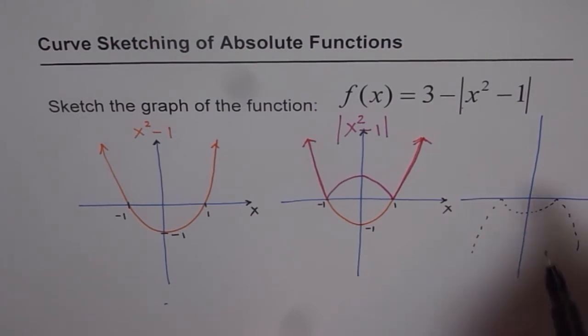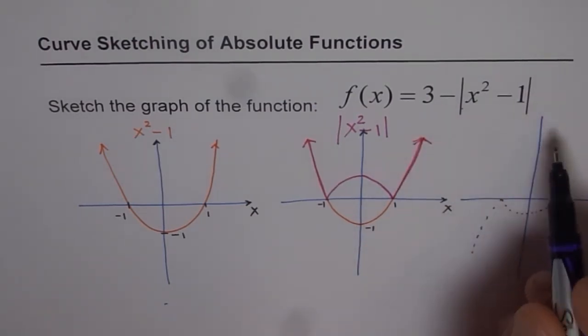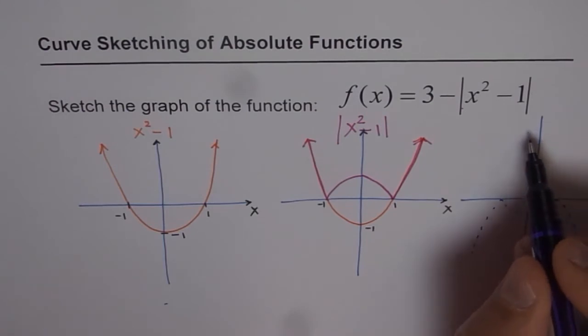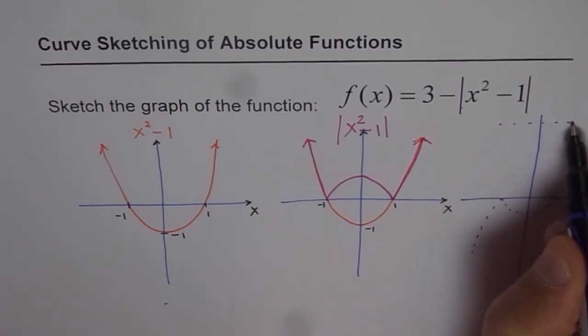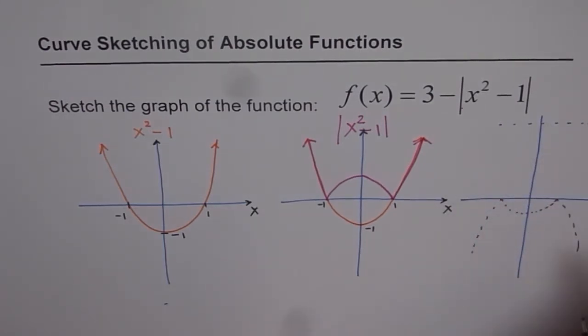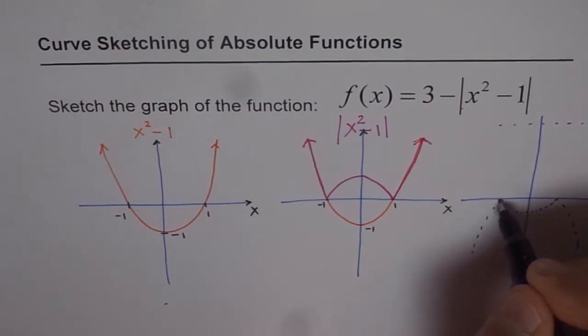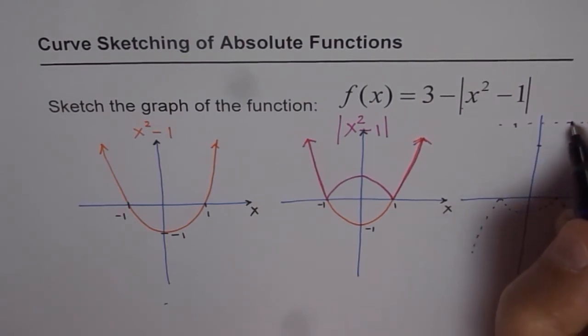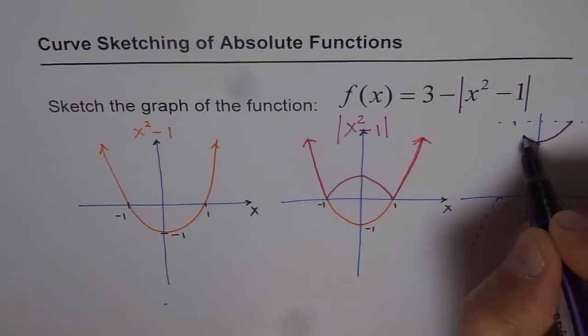Now what we have to do is move 3 units up. So if you move 3 units up, it's kind of coming at this point. Is that okay? So what are we going to get? So these points, all the points will move 3 units up. So we'll get points here and that one will come kind of here. Do you see that? So our graph will look like something like this.